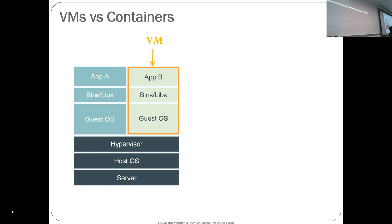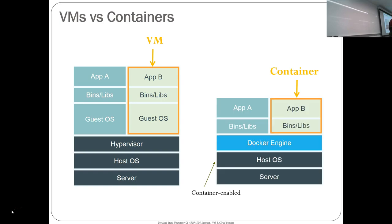Here's a picture showing the difference. For a virtual machine, you have your app, libraries, and an entire copy of the guest OS, plus a hypervisor layer. With containers, you have a container-enabled host OS that talks to Docker. Docker is the container runtime management tool managing namespaces between containers, leveraging namespace support in the OS so calls from individual containers are labeled appropriately. This gives you the abstraction that your operating system is your own.